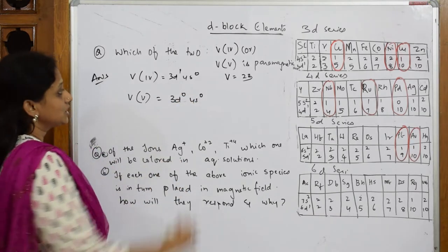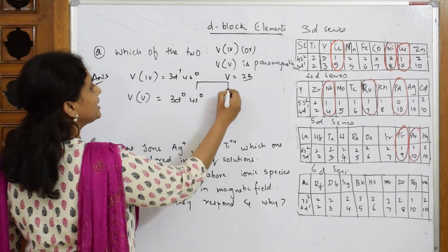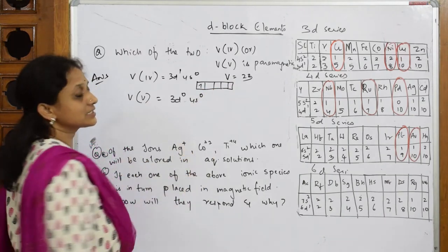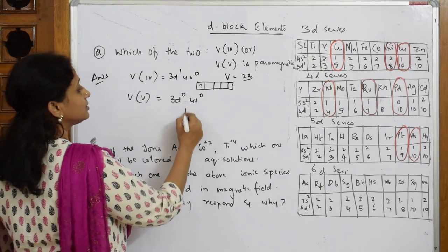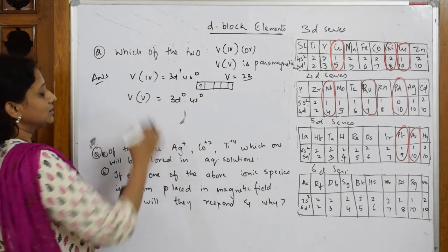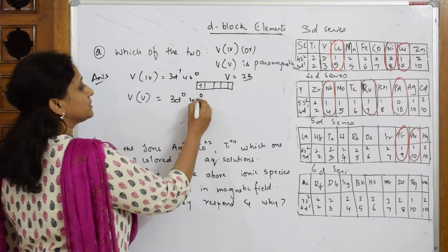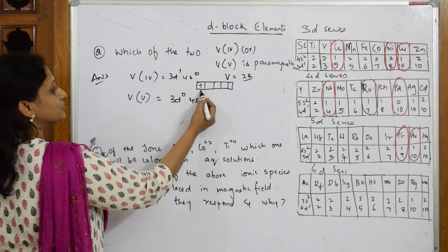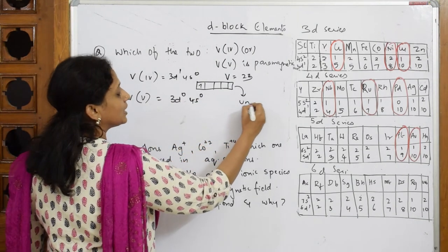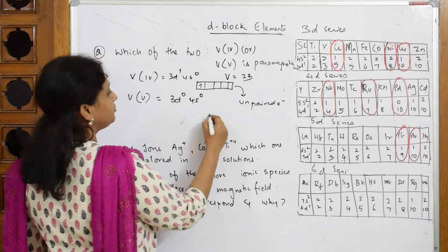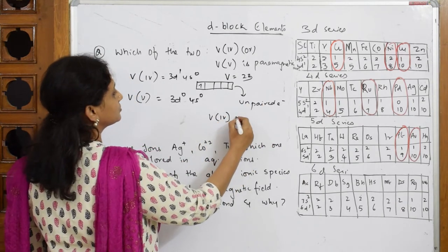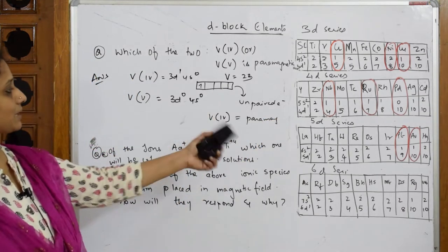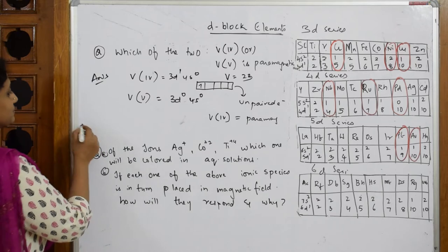For V4+, we have one unpaired electron — so V4+ is paramagnetic. For V5+, there are no unpaired electrons; the configuration is completely stable with no unpaired electrons, so V5+ is diamagnetic. Comparing the two, V4+ is paramagnetic due to its unpaired electron, and V5+ is diamagnetic.